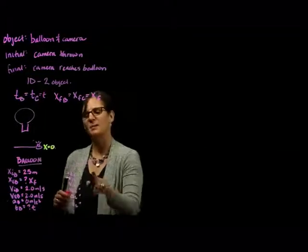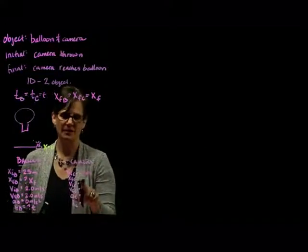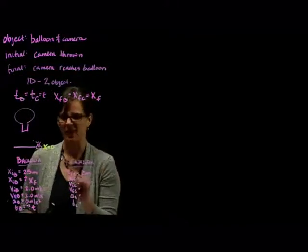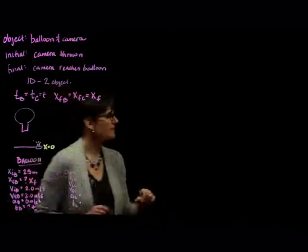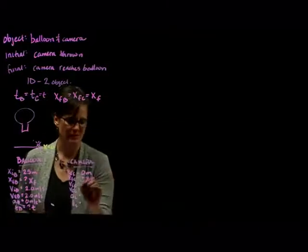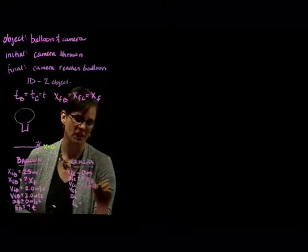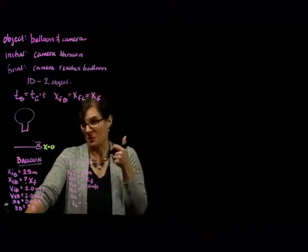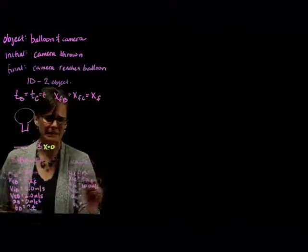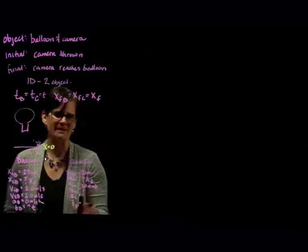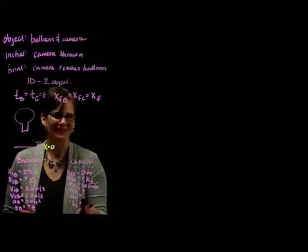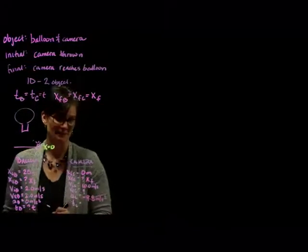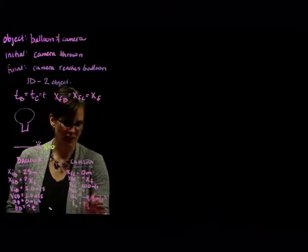For the camera: x-initial is zero. x-final we don't know, but we renamed that x_f. The initial velocity of the camera — it says thrown with an initial speed of 10 meters per second. Speed only gives us the magnitude, but I know it's positive because it's thrown up to the balloon. v-final I don't know. The camera is in free fall once it leaves the hand, so the acceleration is implied even though it's not given in the problem. And we call the time t.